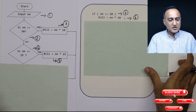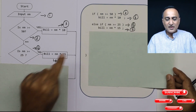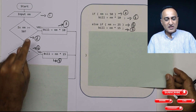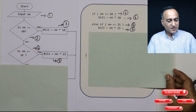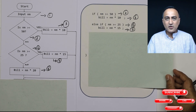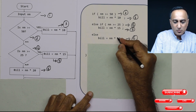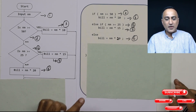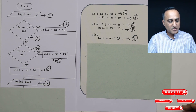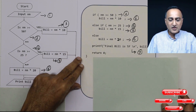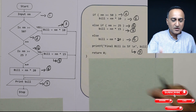If the condition is false, that means I have not bought 50 or more mangoes, so I check: is the number of mangoes greater than or equal to 25? If yes, bill is number of mangoes into 15. If he has not bought greater than or equal to 50 or greater than or equal to 25, then the bill amount is number of mangoes into 20. So I am charging 10, 15, and 20 based on the quantity of mangoes purchased. Then I print the bill, and we hold the program.